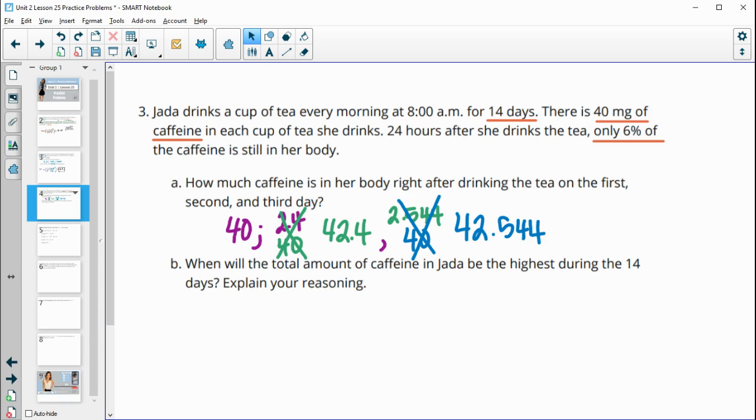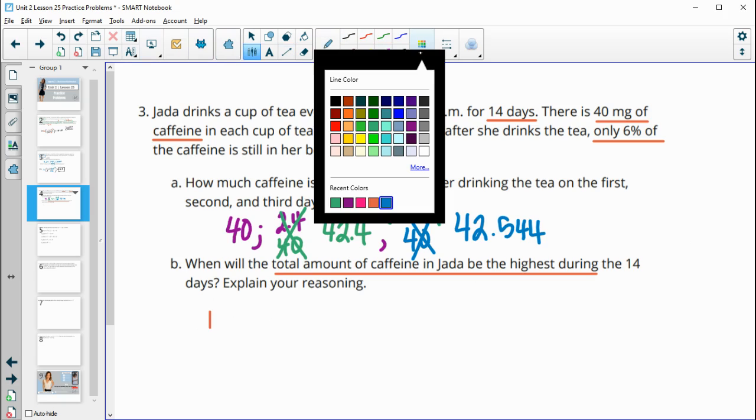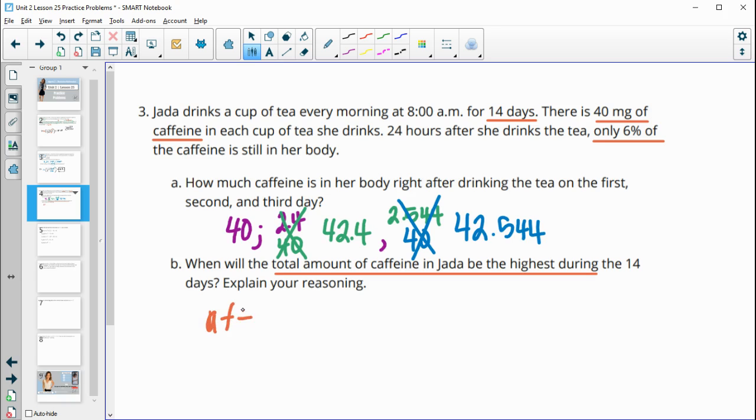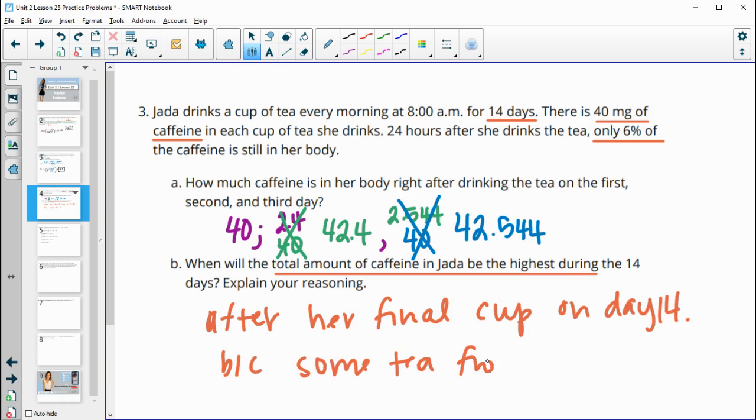So now the next one says, when will the total amount of caffeine be the highest during those 14 days? So you can kind of see by this situation that she started at 40, then she has 6% left and adds another 40. Then 6% of that adds another 40. And if we kept continuing this pattern, the highest amount of caffeine she would have is after drinking that final cup. So after her final cup on day 14. And that's going to be because some tea from day 1 through 13 still remains in her body.